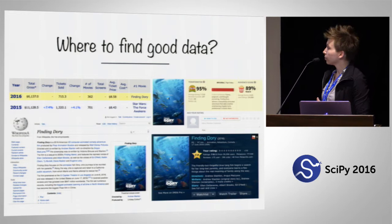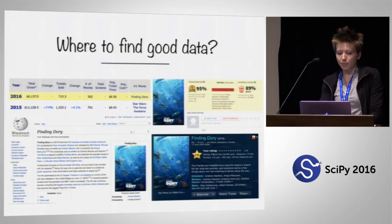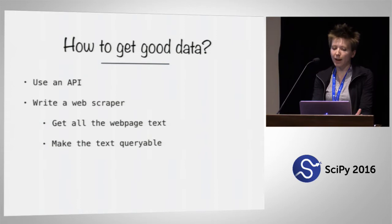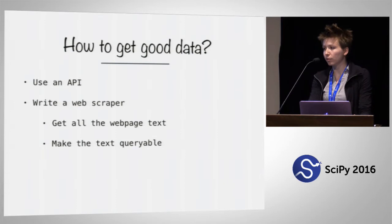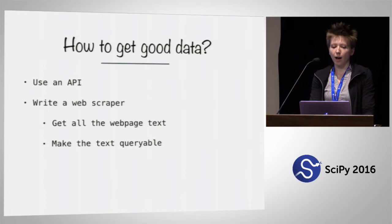IMDB is another great one, or Rotten Tomatoes, or the lesser-known Box Office Mojo. Now we know we're on the internet to find the data, but how do we get the data down? One option is an API — a lot of data sources write an API, which is a set of functions that allows you to extract the data in a reasonable format. However, many sites don't provide APIs, so we have to write a web scraper to get the data ourselves.